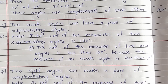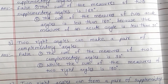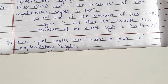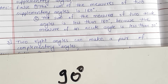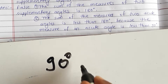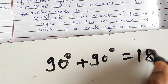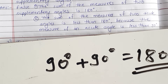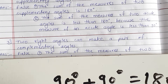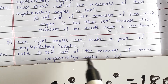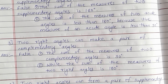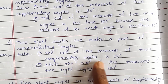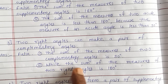The third statement is that two right angles can make a pair of complementary angles. A right angle means 90 degrees. If we try to make a pair of complementary angles with two right angles, this statement is false because the sum of the measures of two complementary angles is 90 degrees.